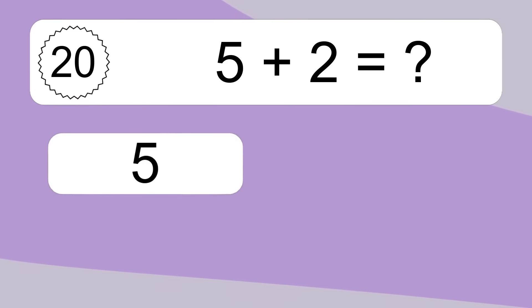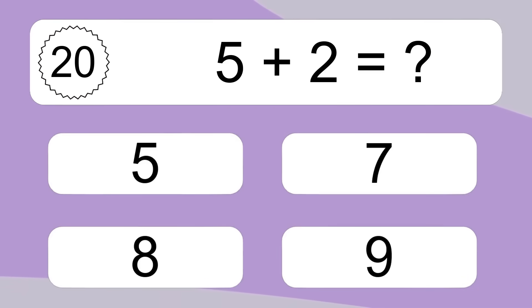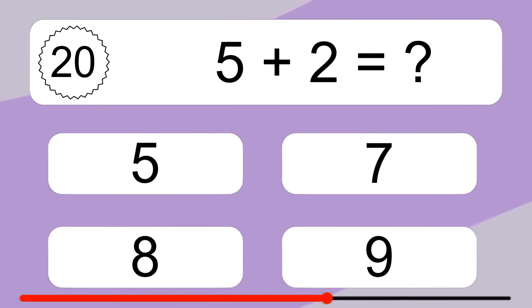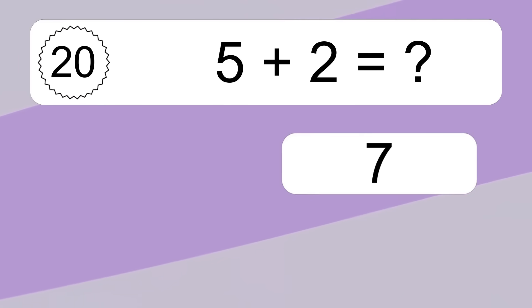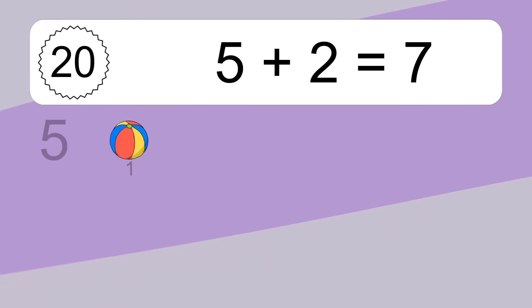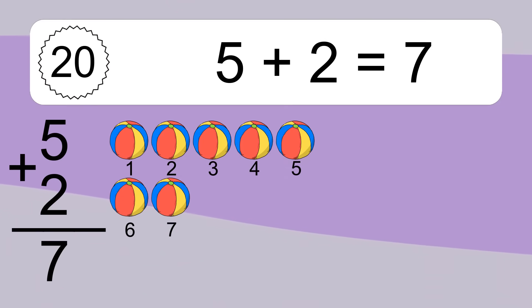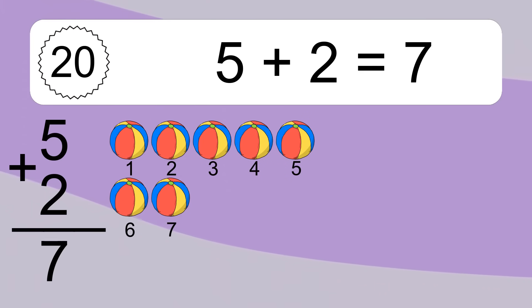5 plus 2 equals what? 5 plus 2 equals 7. Let's count it: 1, 2, 3, 4, 5, 6, 7.